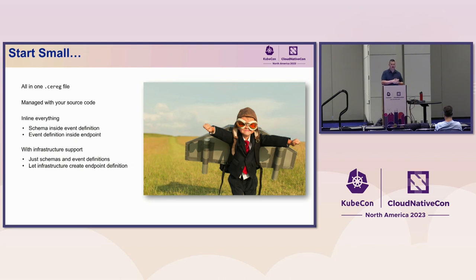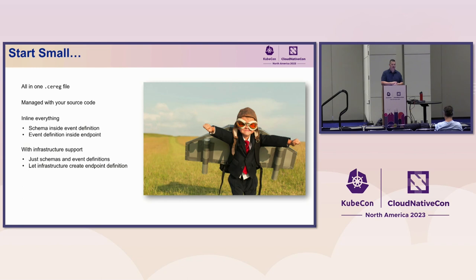In terms of recommendations for how to work with Cloud Events: it's very easy to start small and build out from there. You, as a user, are able to take all these different discovery objects and use them within your own source code. You can include the schema inside your event definitions and the event definitions inside the endpoint. Another option is to build automation and deployment tooling that would create the endpoint definition on the fly from code when it's being deployed, then link that to static definitions and reuse them within your project.